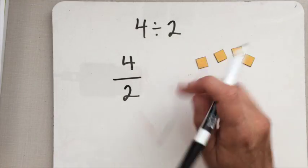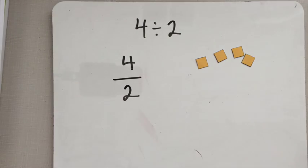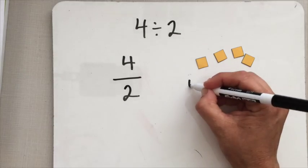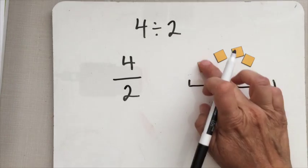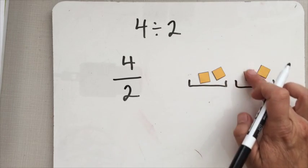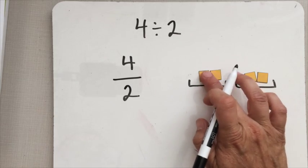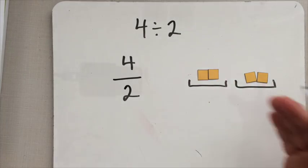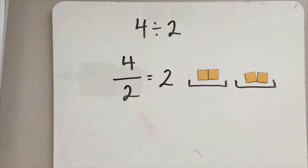And the denominator, 2, is the number of groups I need to divide these into. So I'm going to draw 2 bins, and I'm going to pass out my ones until I run out. And when I've passed out all my ones into the bins, I can see I end up with 2 ones in each bin. So 4 divided by 2 is 2.